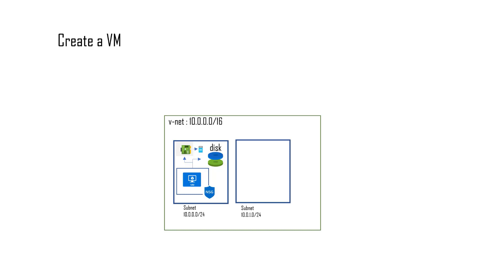And finally, it creates a network security group. The role of the network security group is to allow egress and ingress traffic to and from the virtual machine. So in total, there are five resources that get created: the virtual machine itself, the disk, the NIC, the public IP address, and the network security group.